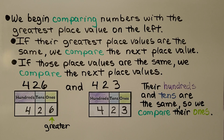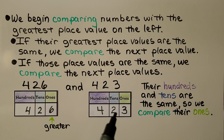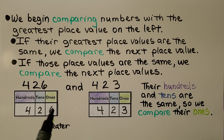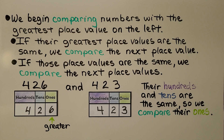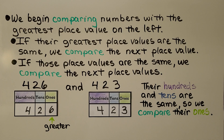We begin comparing numbers with the greatest place value on the left. If their greatest place values are the same, we compare the next place value, and if those are the same, we compare the next. We have 426 and 423. Their hundreds and tens are the same, so we compare ones. Six ones is greater than three ones, so 426 is greater than 423.